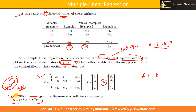In the GATE exam, we will not be solving this expression using Python. They will ask simple questions based on this, or may give three simple variables and ask you to find the value of B. We will solve one example based on multiple linear regression using this expression in the tutorial. That's it from this lecture. Thank you.